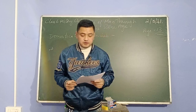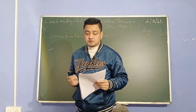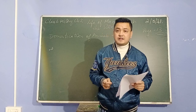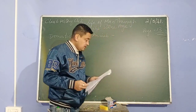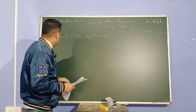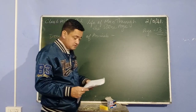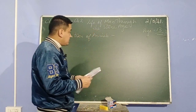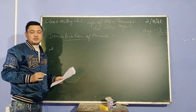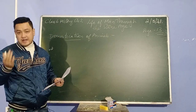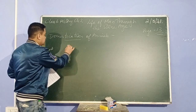Good morning children. This video is on Chapter 2: Life of Man Through the Stone Age, for Class 6 History. Today we are discussing the topic domestication of animals. In simple words, domestication means keeping of animals, or taming of animals.